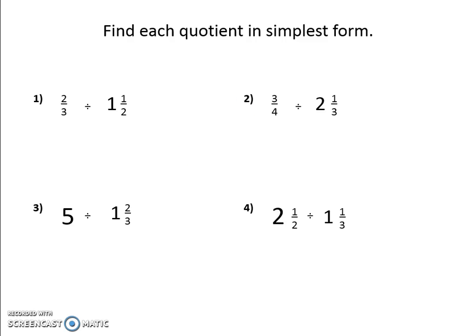Okay. Now it's your turn. Write each quotient in simplest form. In the work section of your WSQ, I would like to see you change each problem so that there is no mixed number or whole number. So if I were doing number one, I would write two over three divided by one times two is two, plus one is three, three over two.